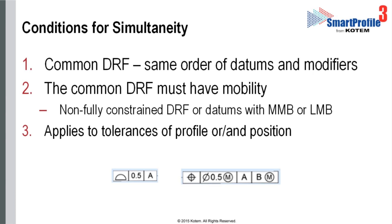Mobility can be achieved when the datum reference frame is not fully constrained or when the datums are referenced at maximum material boundary or least material boundary. Third, simultaneity applies only to tolerances of profile or tolerances of position.